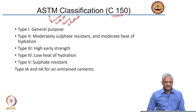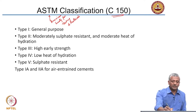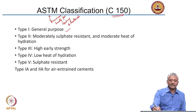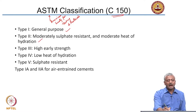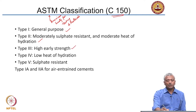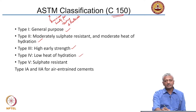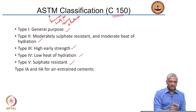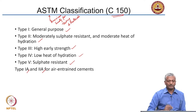According to ASTM C150, cement is classified as: general purpose Type 1 cement; moderately sulphate resistant and moderate heat of hydration Type 2 cement; high early strength Type 3 cement; low heat of hydration Type 4 cement; and sulphate resistant Type 5 cement. Sometimes an air entraining agent is added to Type 1 and Type 2 cements, calling them Type 1A and Type 2A.